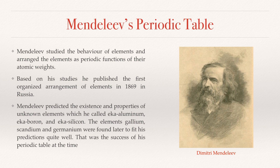Mendeleev predicted the existence and properties of unknown elements, which he called eka-aluminum, eka-boron, and eka-silicon. The elements gallium, scandium, and germanium were later found to fit his predictions quite well. That was the success of his periodic table at the time.